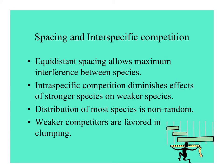How plants are spaced affects how they compete. If the spacing is equidistant, there's maximum potential for competition between species. Intraspecific competition within a species diminishes the effects of a stronger species on a weaker species. That's why we have to consider both intra- and interspecific effects. In the real world, the distribution of most species is non-random, and weaker competitors are favored when plants are clumped.